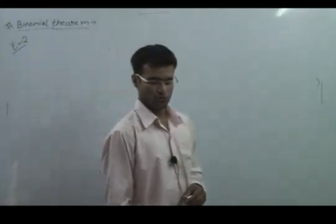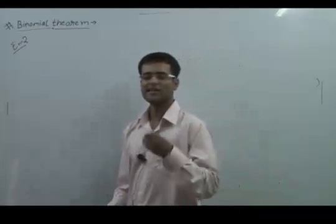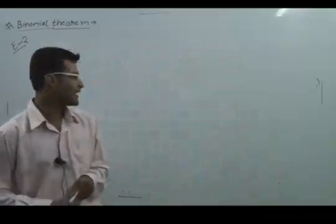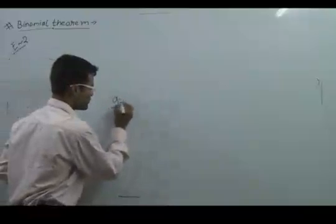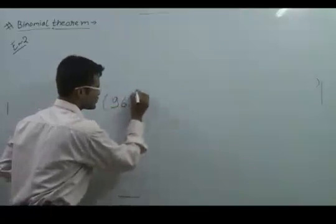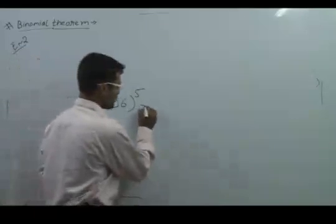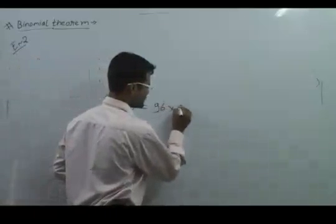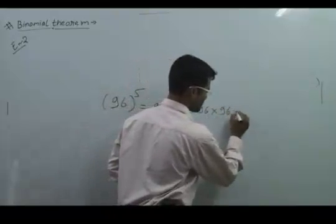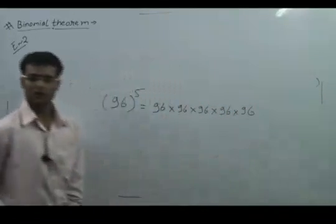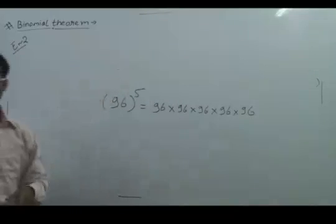Now in example number 2, it shows how you can find out any numeric value — how you can find the multiplication of things like if you want to find 96 raised to the power 5, you have to do 96 × 96 × 96 five times, which is not a feasible thing. So how can we do these things by the binomial theorem?